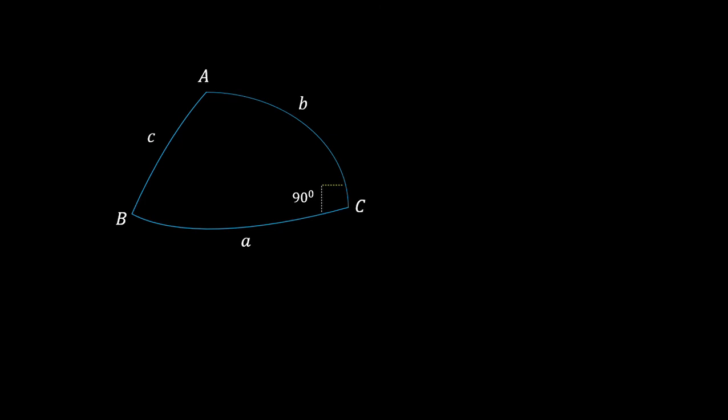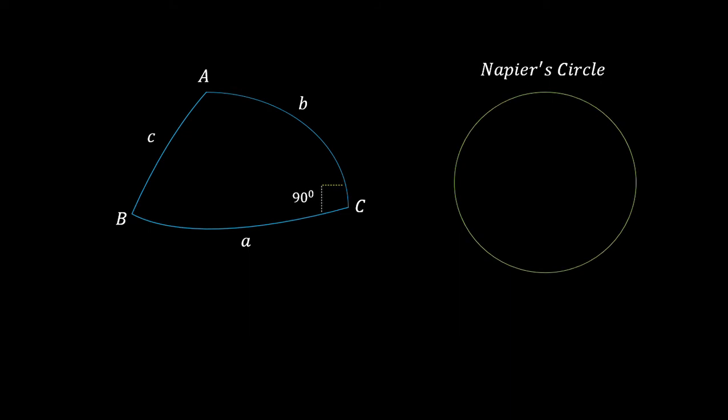Now let's move on to the right spherical triangle. A right spherical triangle is a spherical triangle with one interior angle equal to 90 degrees. Again, let's put some labels. To find the formulas for solving the right spherical triangle, we'll be using Napier's circle and Napier's rule, and we'll apply Napier's rule to build the formulas.